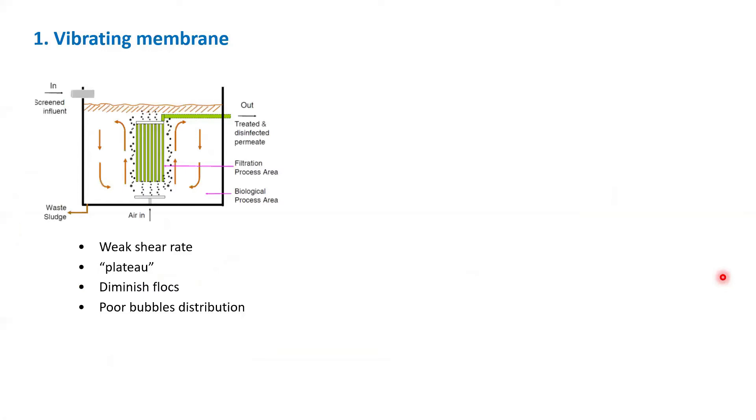The first approach is using vibrating membranes. This is part of my old study. Currently, people use coarse bubble aeration. When you use the aeration to scour off fouling, it has a few inherent limitations. Air bubble only produces weak shear rate. It reaches plateau, which means at one point you cannot improve the permeability. By pumping air, you achieve sort of cleanings, but at one point you cannot clean anymore. In the context of MBRs, it might also alter the feed condition, making it fouling prone. And then you have problem with bubble distribution.